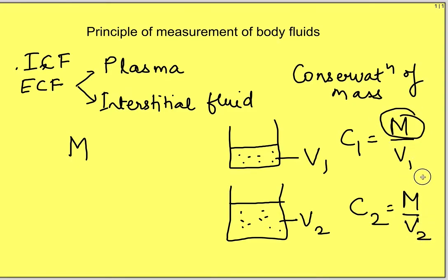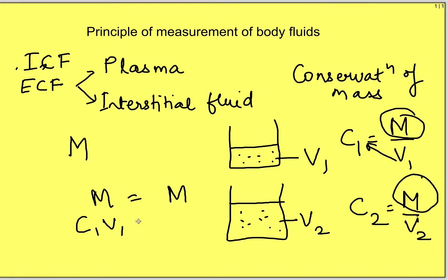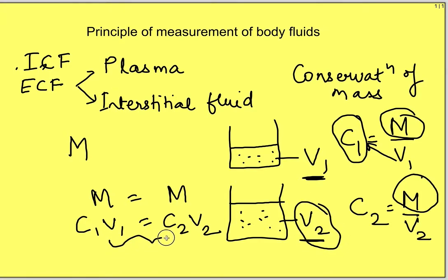Since mass remains the same if it is not being destroyed, we can write m equals m. We know that m equals c1 times v1, so we can write c1v1 equals c2v2. If we know the initial volume v1, we can determine c1 by the formula m divided by v1. Now suppose we don't know how much v2 is — how can we determine volume v2 by this principle of conservation of mass?